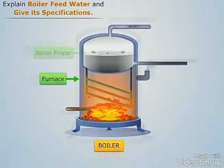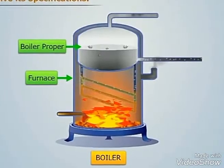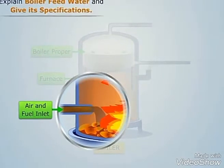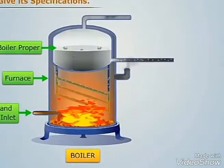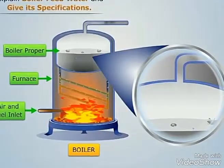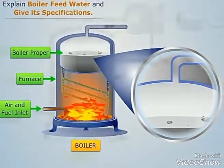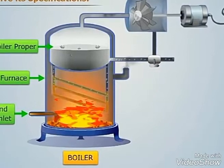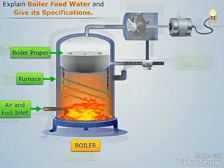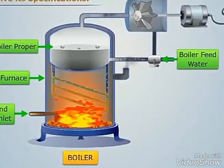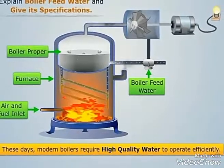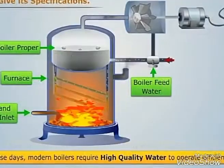It consists of two main parts: furnace and boiler proper. The furnace provides heat by burning the fuel, and the boiler proper is a device where water changes into steam due to heat. This steam or hot fluid is then recirculated out of the boiler to be used in various processes in heating applications.